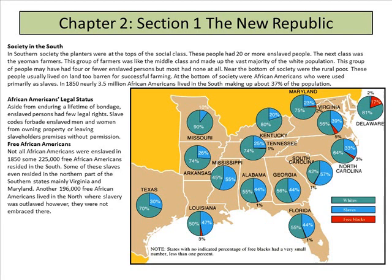African Americans' legal status: aside from enduring a lifetime of bondage, enslaved persons had few legal rights. Slave codes forbade enslaved men and women from owning property or leaving the slaveholder's premises without permission. Free African Americans: not all African Americans were enslaved. In 1850, some 225,000 free African Americans resided in the South, some having gained freedom in the northern parts of southern states, mainly Virginia and Maryland.